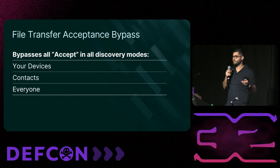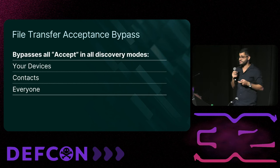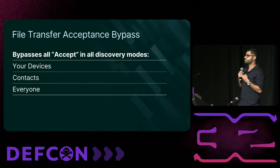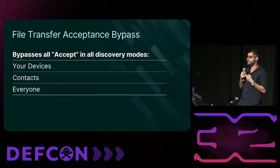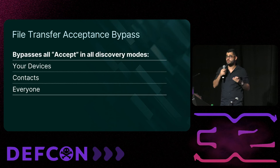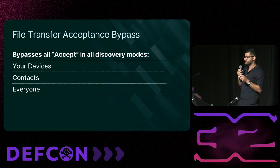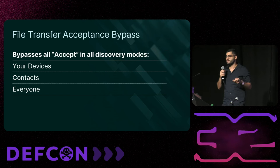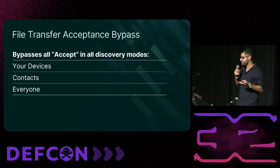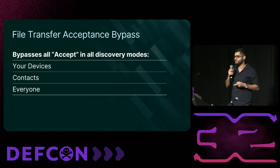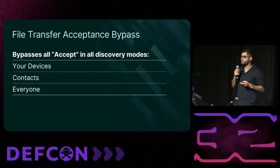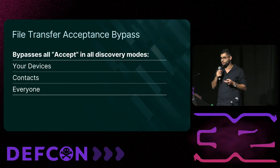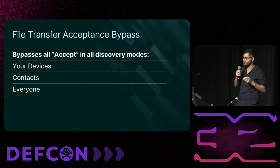To make things even better, we discovered this approach works for any discovery mode. Even if your device is configured to accept files only from your contacts, we could still send files to your device without any notification and without requiring your acceptance. It's also important to note that visibility modes don't grant file transfer capability — if your device is set to accept files only from your contacts, others normally can't send files because the protocol includes a verification step to ensure the sender is authorized.